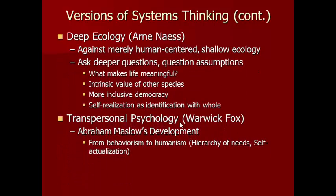Deep ecology is a concept Arne Næss, a Norwegian philosopher, wrote about. It argues against shallow ecology — thinking about the world as just a set of resources humans can use — and instead asks deeper questions, like whether species have some intrinsic value different from their use value for humans. Næss takes concepts like democracy and tries to make them more inclusive, imagining other species as being included in a democracy. He also talks about self-realization not as an individual process but as seeing yourself in the larger whole of nature and realizing a connection with that larger whole.